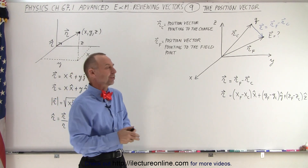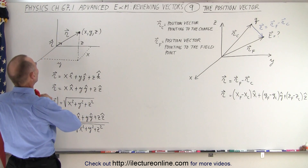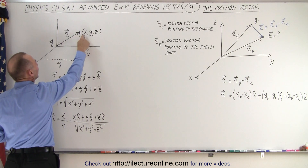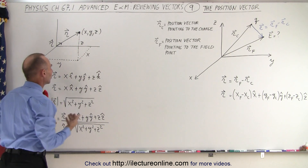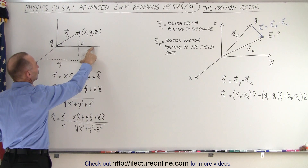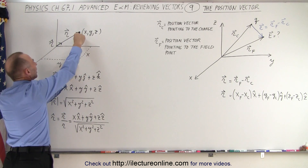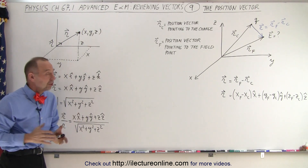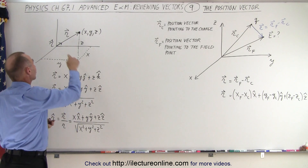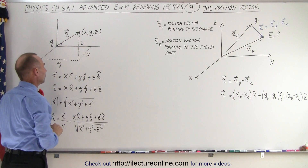What do we mean by the position vector? From a standard way of defining it, we simply have a point in three-dimensional space, and that point has an x, y, and z coordinate. We can see the distance away from the origin in the x direction, in the y direction, and in the z direction. So we simply come up with a vector that points from the origin to that location — we call that r, the position vector.